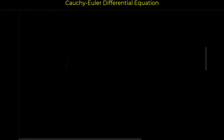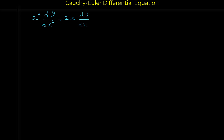Let me show you another example of the Cauchy-Euler differential equation: x squared d²y/dx² plus 2x dy/dx plus 5y equals zero. First we have to write the characteristic equation. The characteristic equation is r squared plus (a minus 1) r plus b equals zero; here a is 2, so 2 minus 1 is 1, giving r squared plus r, and b is 5, so plus 5 equals zero.